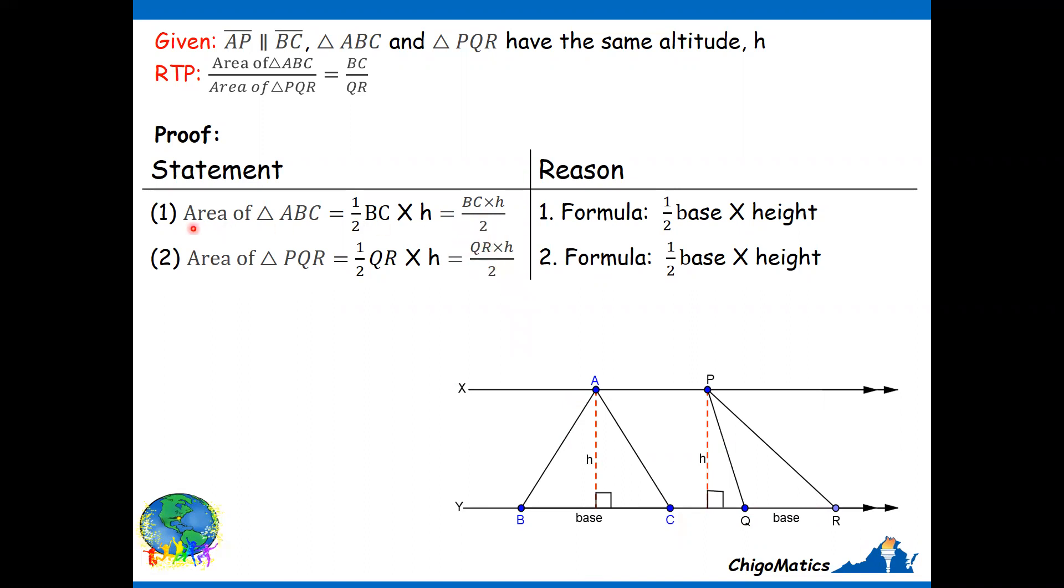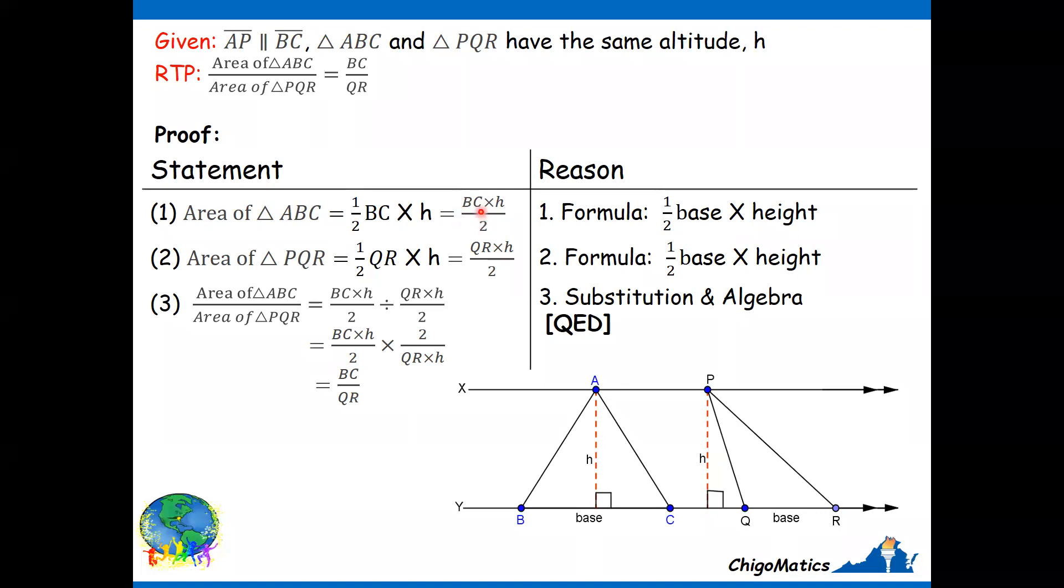Now, I have the areas of the respective triangles. What I want is to find the ratio of the areas. Therefore, area of triangle ABC over area of triangle PQR. I then substitute for the respective. This is for area of triangle ABC, which is this one.